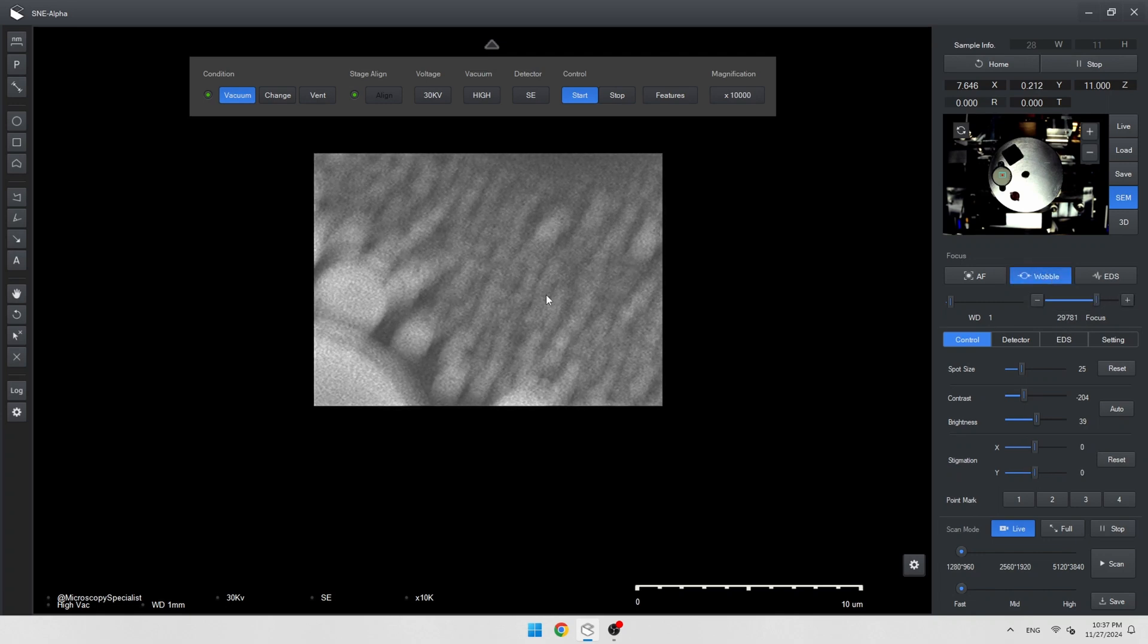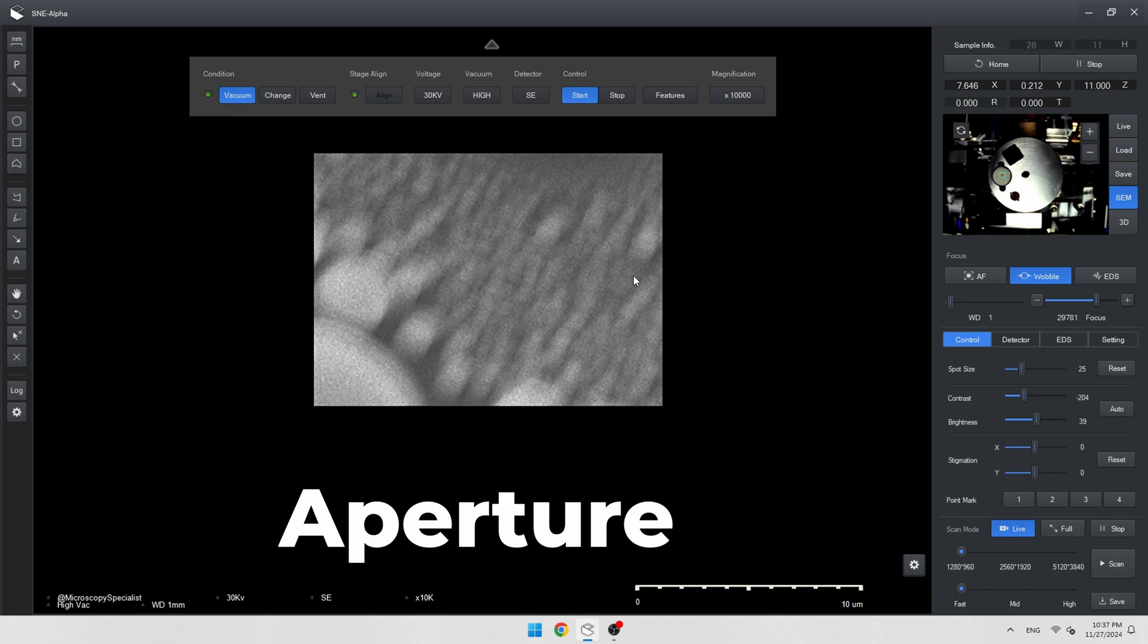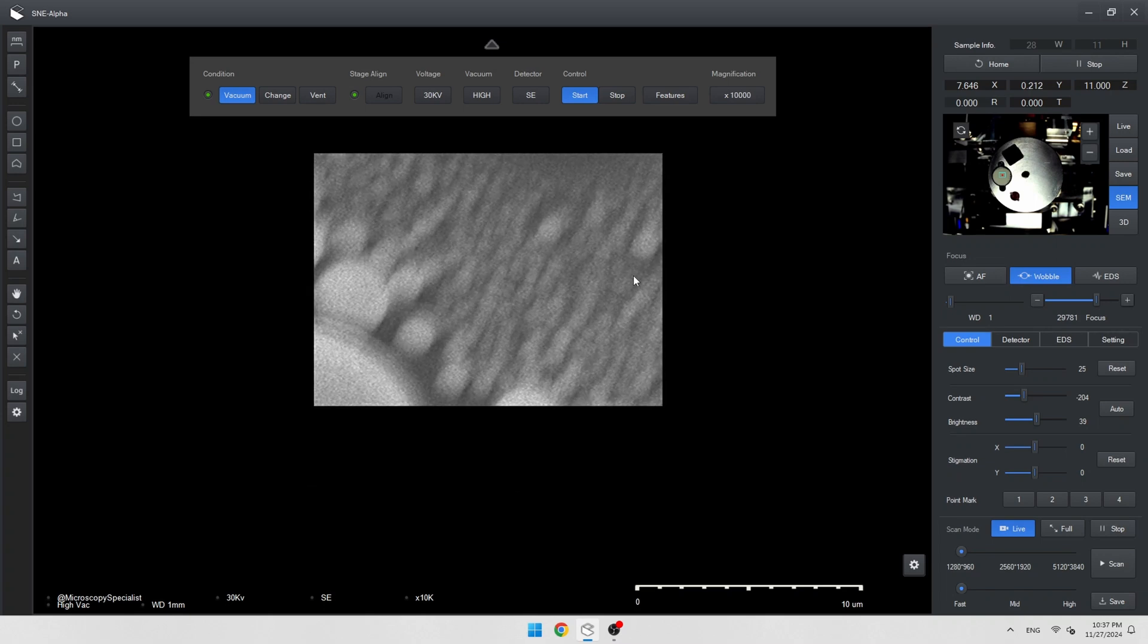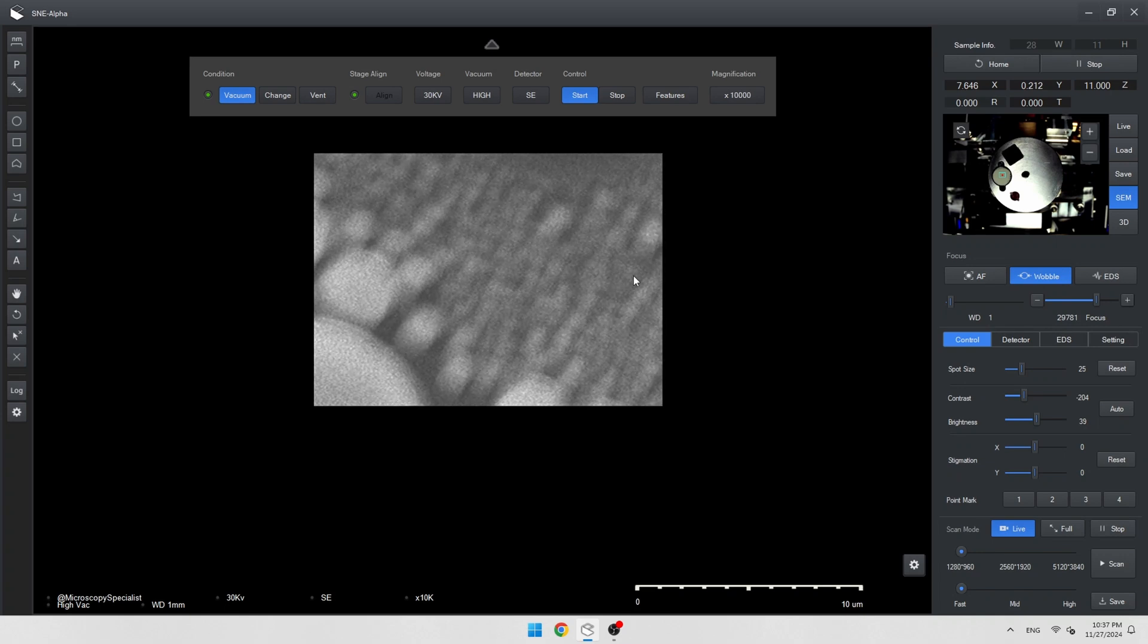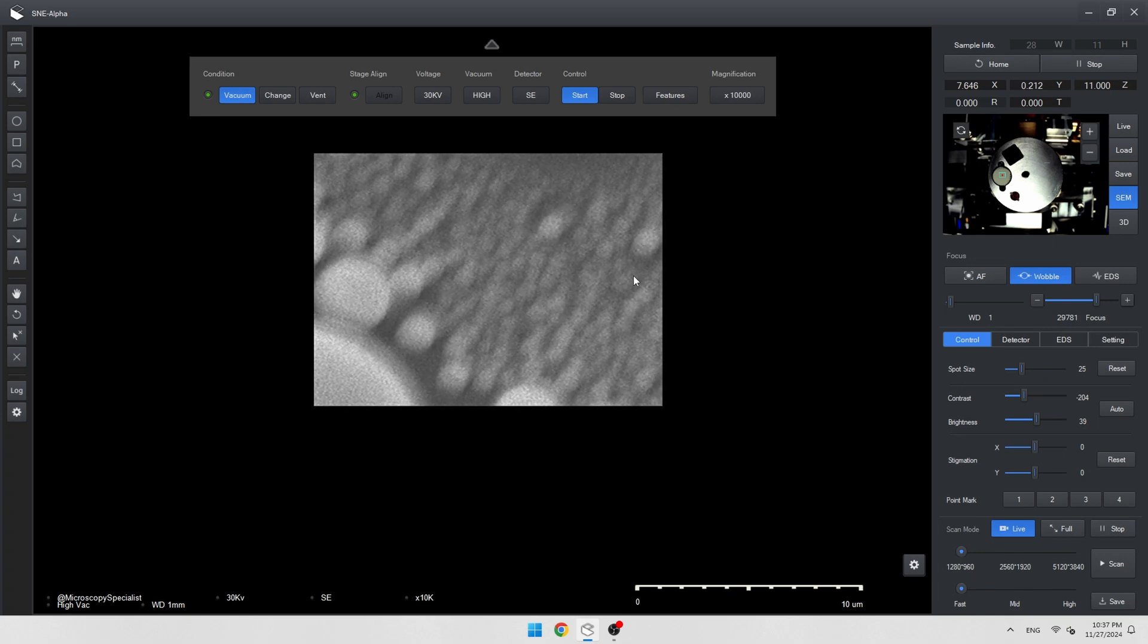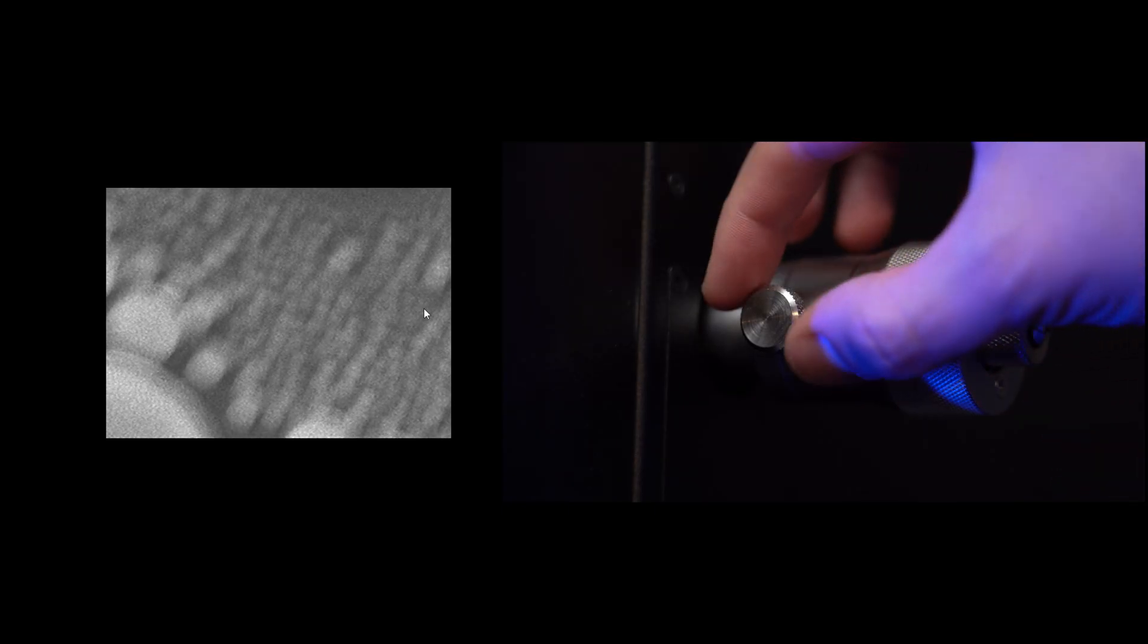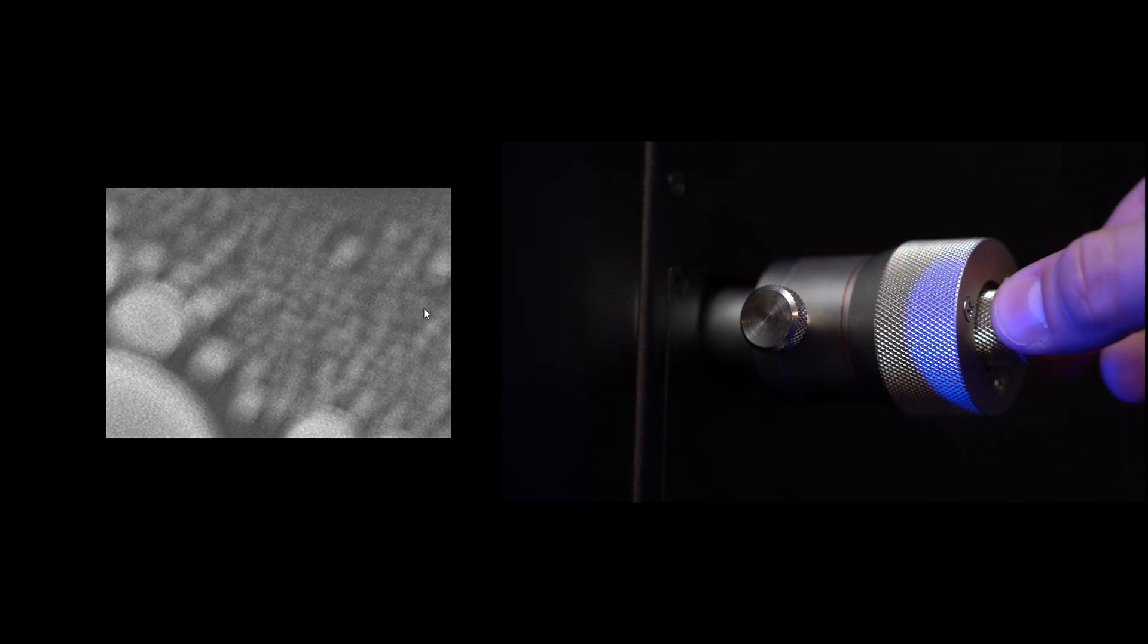Now we should adjust aperture and stigmation. First is the aperture. Click the wobble button. The microscope changes focus up and down and we see the sample shift. This indicates that the beam is not perpendicular to the surface of the sample.